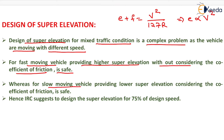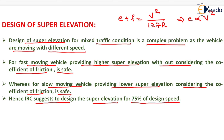For slow-moving vehicles, providing lower super elevation while considering the coefficient of friction is safe, because at low speed the tyre-pavement contact is large and friction is high. Hence, IRC suggests designing super elevation for 75% of the design speed.